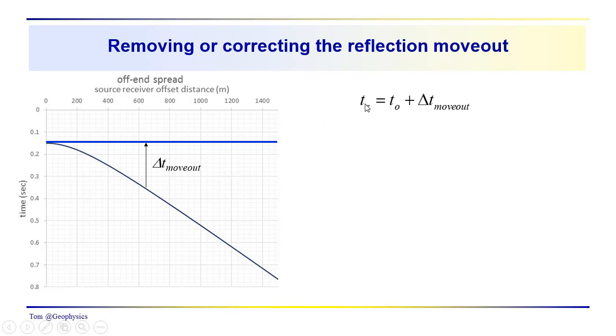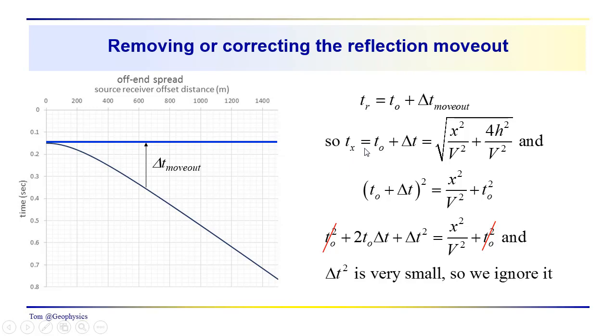If we come back to the reflection time distance relationship, we have t sub r is equal to t0, that's this time, plus delta t which is the move out. And so, t sub x or t sub r is just equal to t0 plus delta t, the move out. And that's equal to what should be a familiar looking relationship to you by now. This is the reflection time distance relationship as a function of x, source receiver distance, thickness of the layer and the velocities.